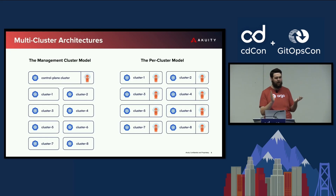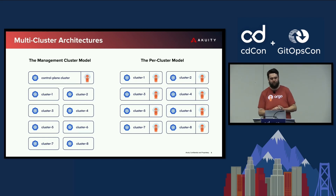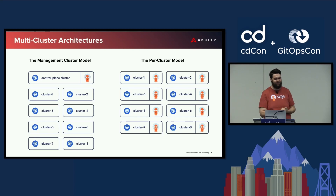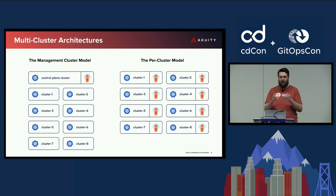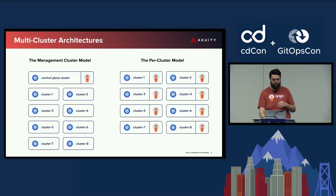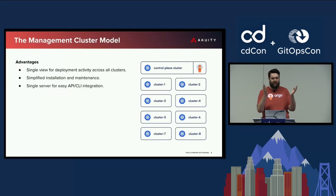Here are the two core models, which I consider on opposing ends of a spectrum. First is the management cluster model — often called the hub and spoke model — where Argo CD runs in a central cluster outside of your normal application or service clusters. On the other end is the per-cluster model, where for every cluster you have a standalone instance of Argo CD running in it.